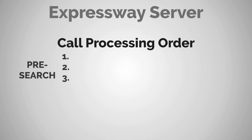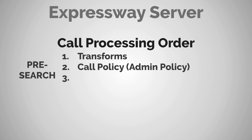The first three things checked during the call processing order are called pre-search components. They're called pre-search because before the Expressway ever searches for the alias that was dialed, it checks these three things — because all three have the ability to change the alias from its originally dialed form. In order, they are: transforms, call policy (also called admin policy), and user policy.